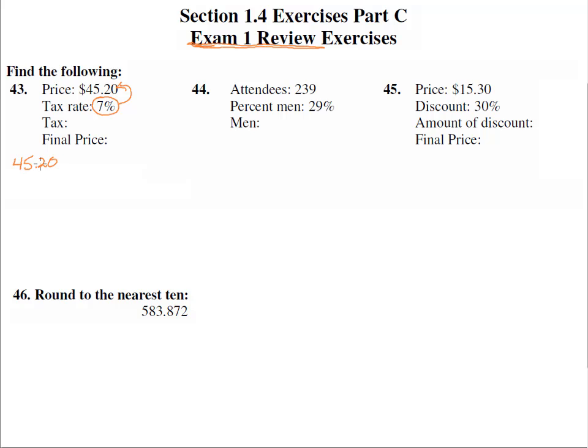7% of that means we're multiplying by 0.07. Now when we move this decimal one two places that's 0.07. Seven times zero is zero, seven times two is 14 carry the one, seven times five is 35 plus one is 36 carry the three, seven times four is 28 plus three is 31.